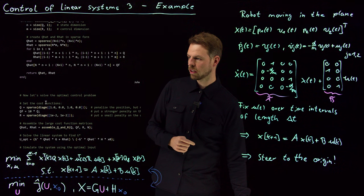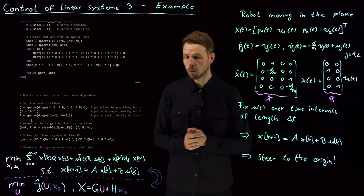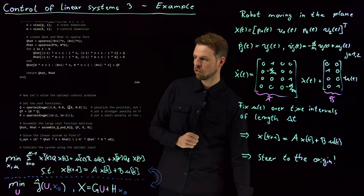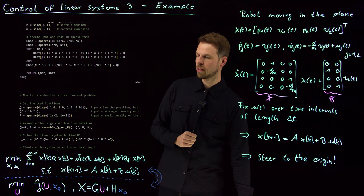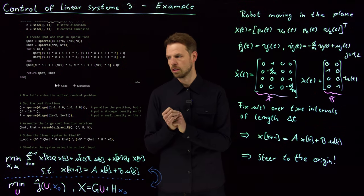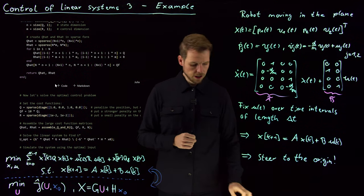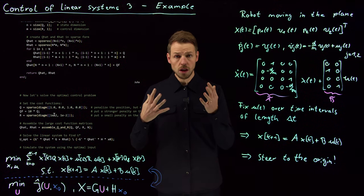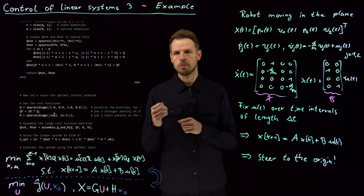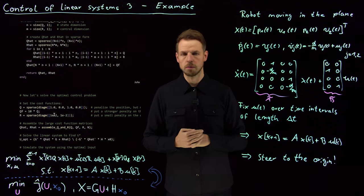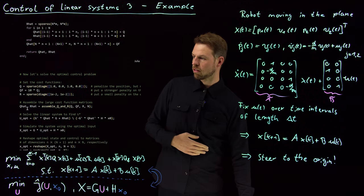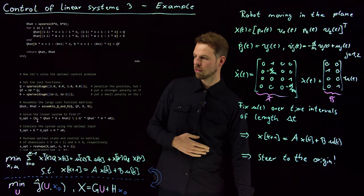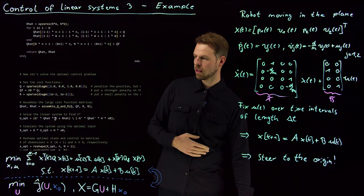Now we can define Q and Q final and R, where you see for Q we're just going to penalize the positions. So we penalize the first position by one, second by one, and the final one is 10 times this. So in the end we want to really make sure that we are at the origin in the end. And we have a small penalty on the control input which is 10 to the minus 2, so a little smaller to give us a small input penalty but not too large. What matters is the position in the end. And so now we assemble Q hat and R hat and finding the optimal U is just solving this linear system.